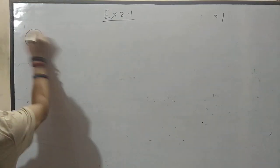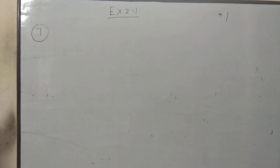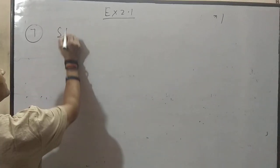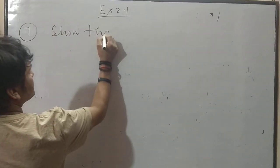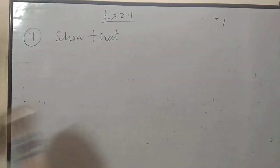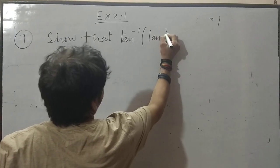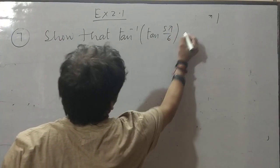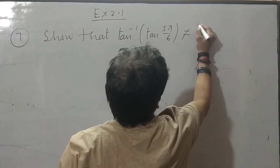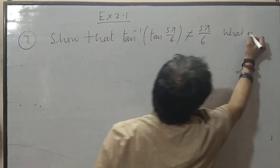Question number 7 is very important. How are they asking the question? See, show that tan inverse tan 5π/6 is not equal to 5π/6. Then what is its value?